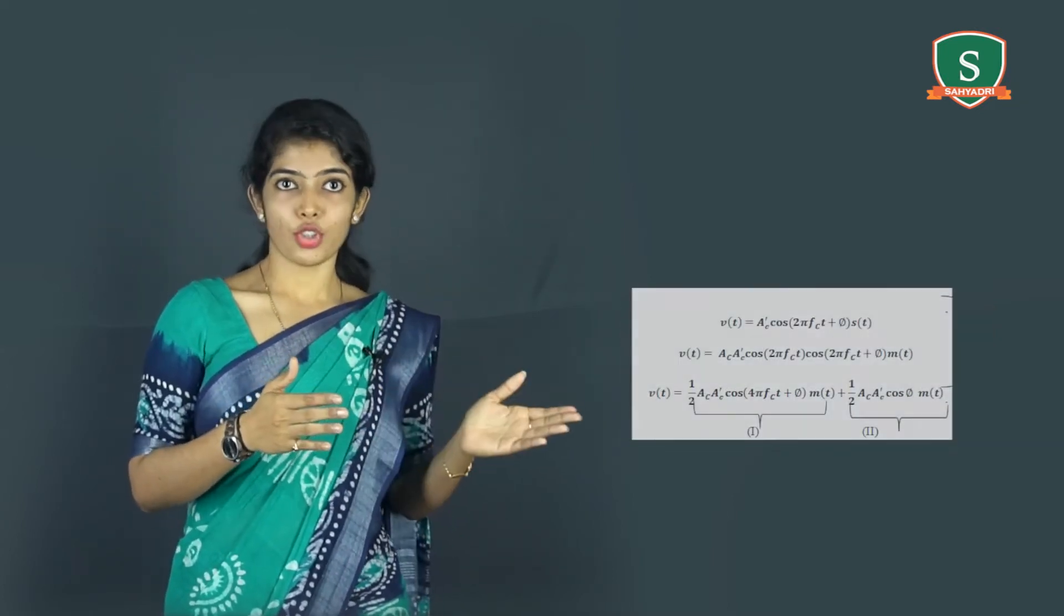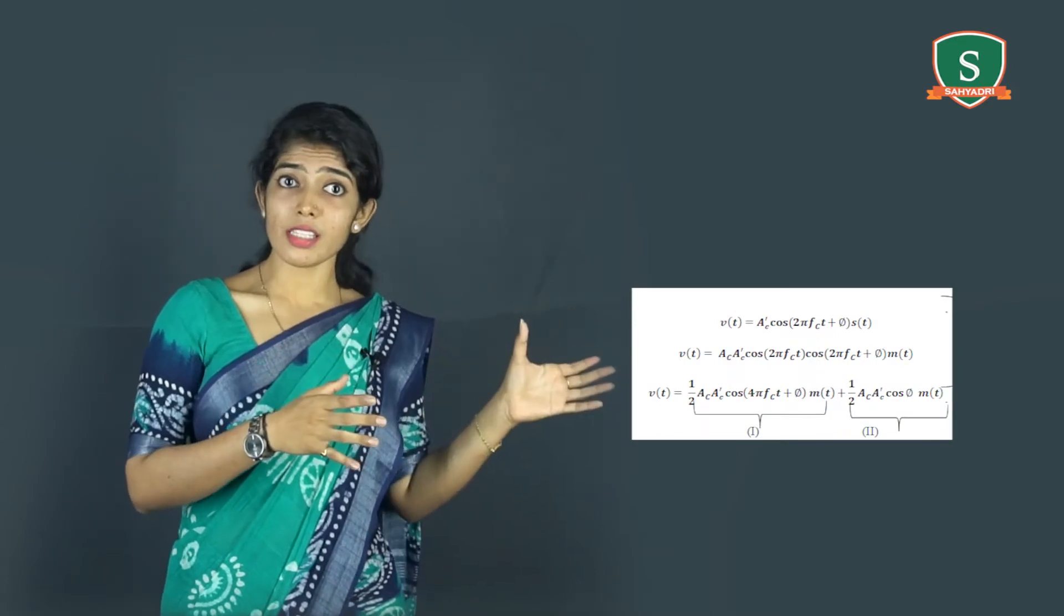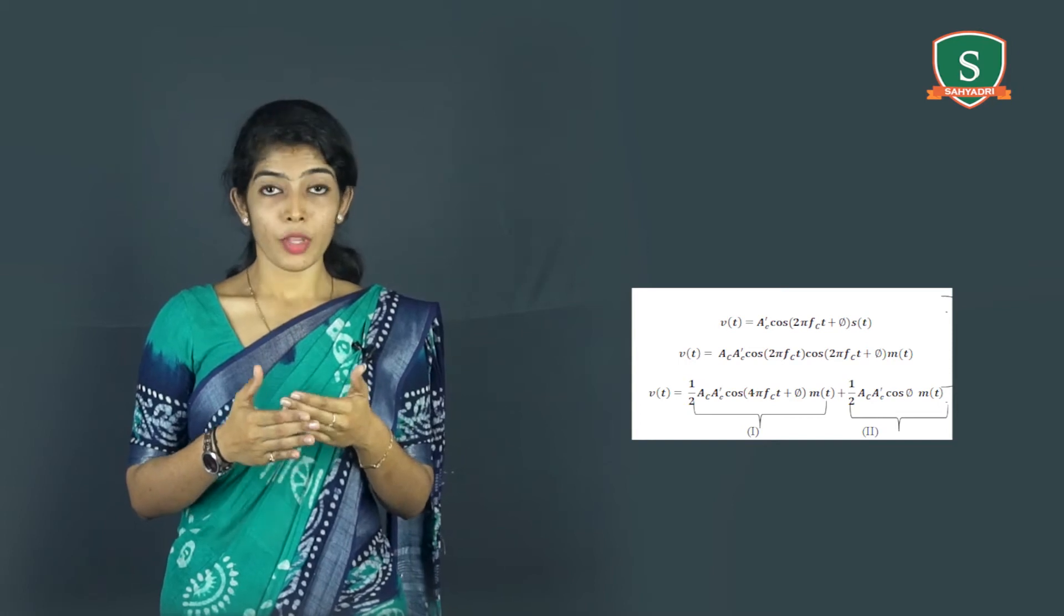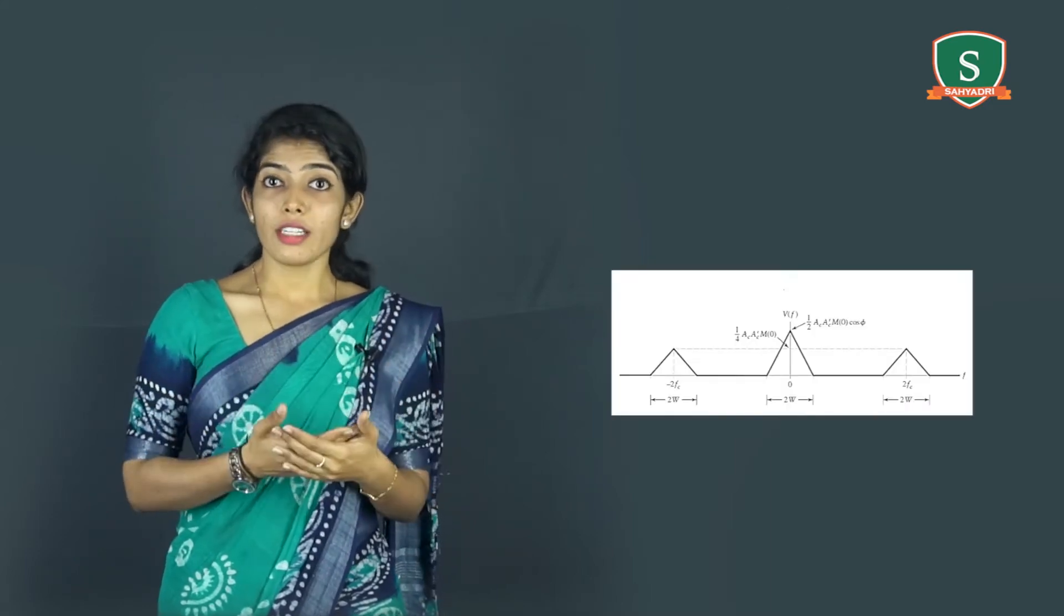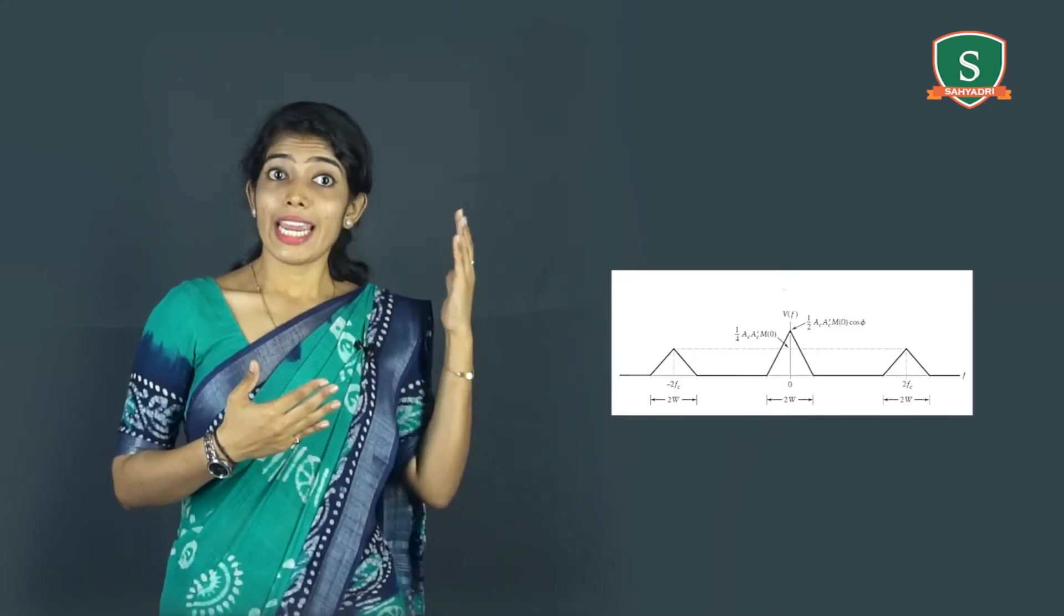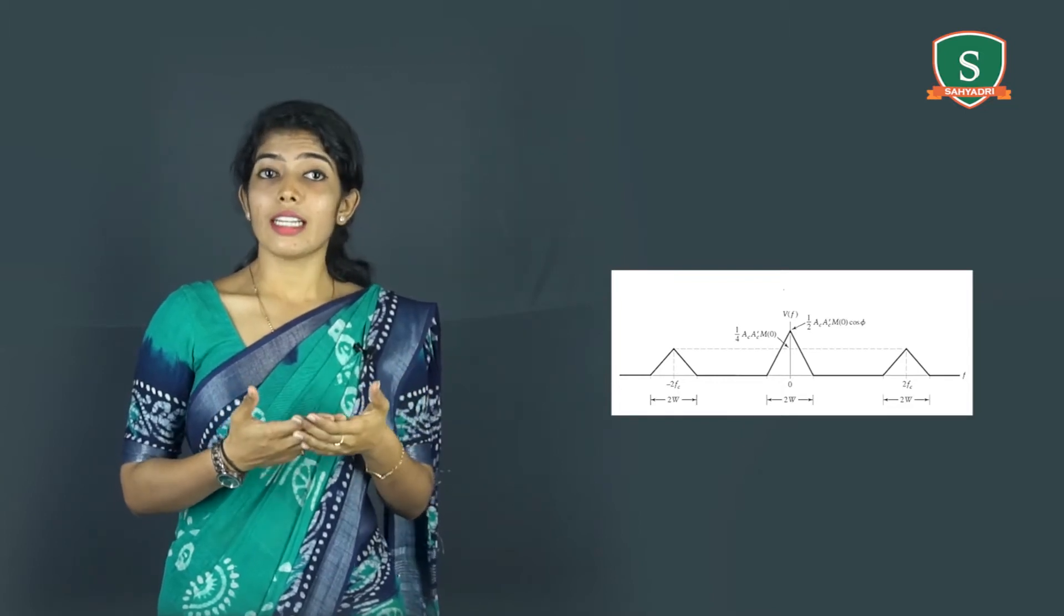figure one is as shown. The first term in this equation represents a DSB-SC modulated signal with a carrier frequency 2fc, whereas the second term is proportional to the baseband signal m(t). This is further illustrated by the spectrum V(f) as shown in the figure, where it is assumed that the baseband signal m(t)